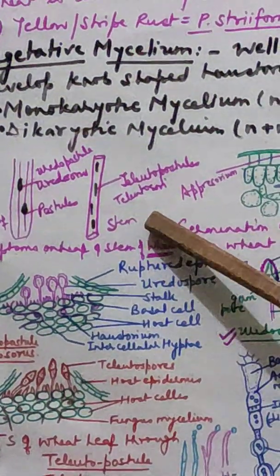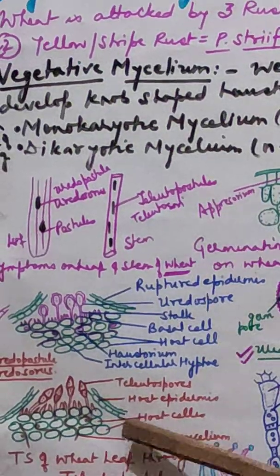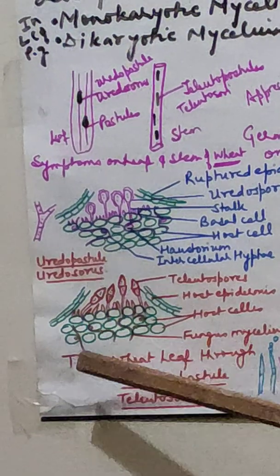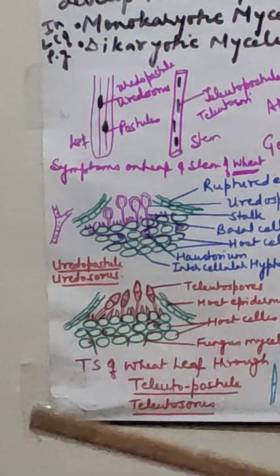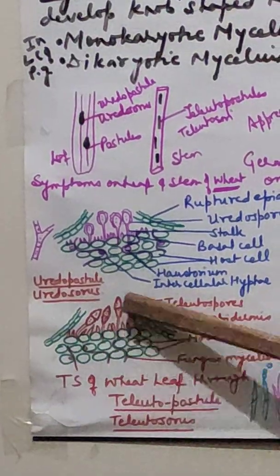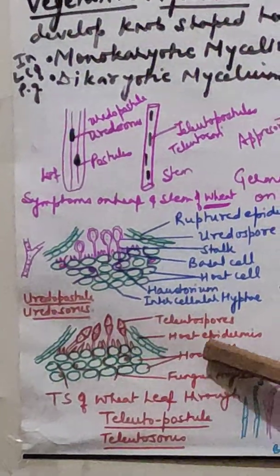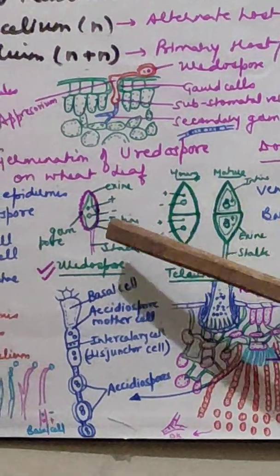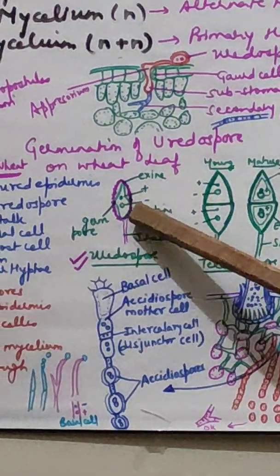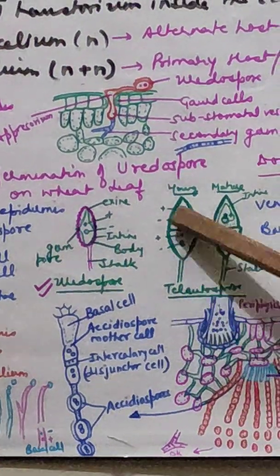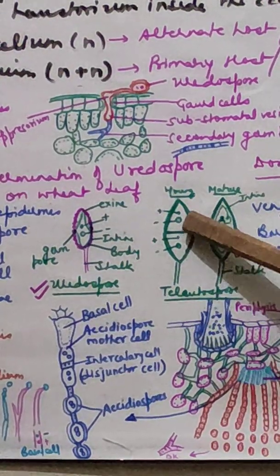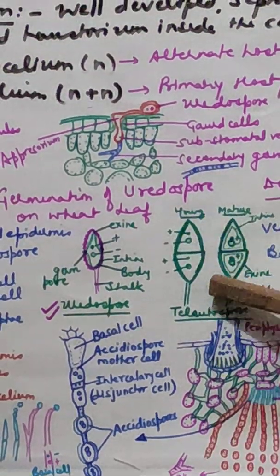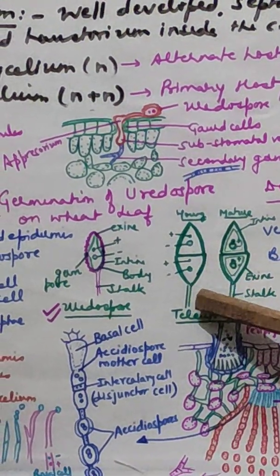At the end of the season, the teleutopustules or telia are formed. Cutting a section through the telium, we see the mycelium creeping between host cells with haustoria absorbing nutrition. Some mycelium grows upward to form teleutospores. The teleutospore is a stalked, bicelled structure — compare this with the uredospore which had only one cell. Both cells of the teleutospore contain two nuclei — one positive and one negative strain. The outer wall (exine) is thick and the inner wall (intine) is thin.